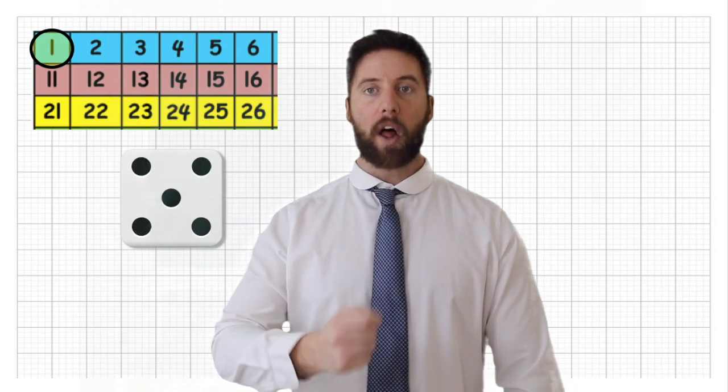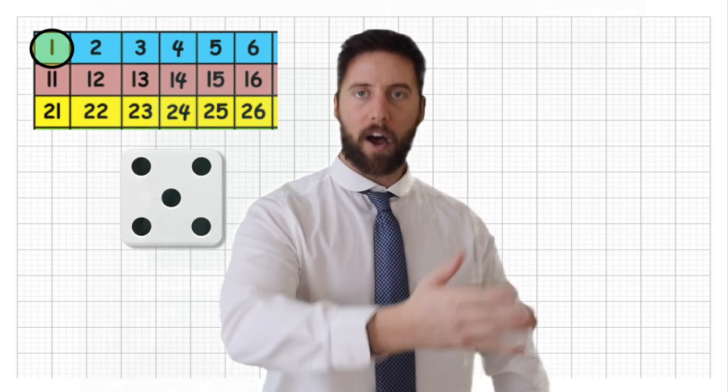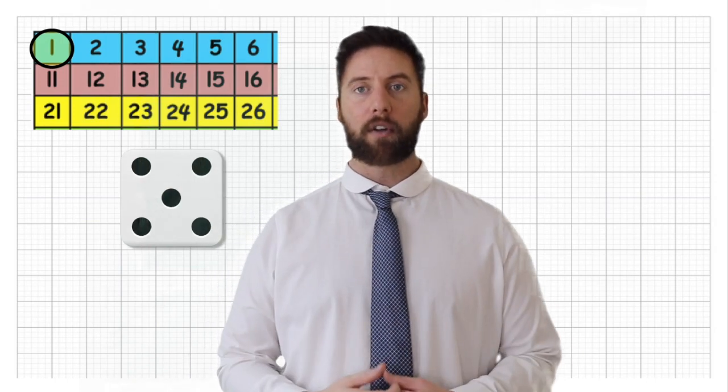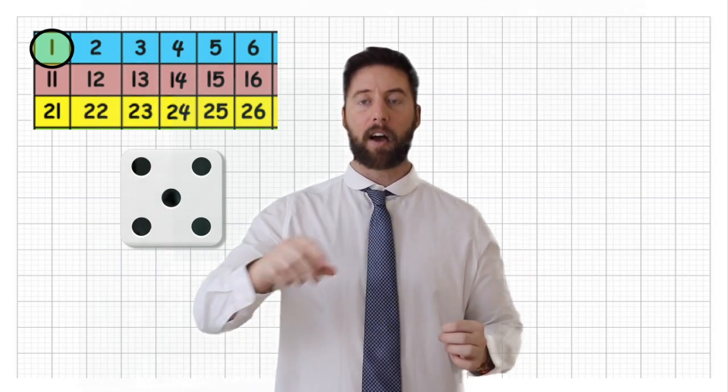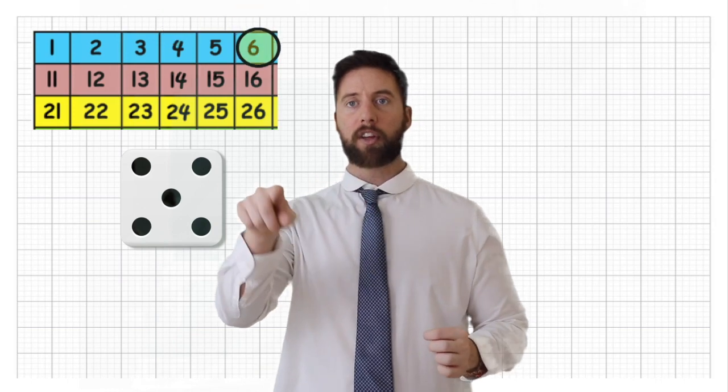Let's imagine I roll a five. Let's see it. Roll a five. Cool. There we go. I've rolled a five. Now, I've started on one. Let's see where I land. I've got five. One, two, three, four, five. So I've landed on six.